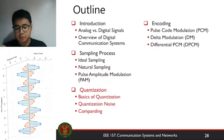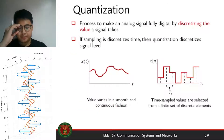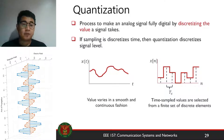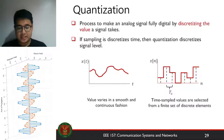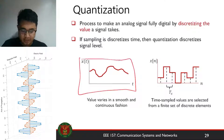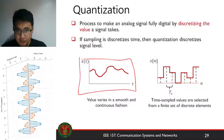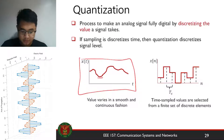Quantization is the process of how we discretize signal levels for our analog signals. The quantization process makes an analog signal fully digital by discretizing the value of the signal. If sampling discretizes time, quantization discretizes signal level. To visualize that, we have an analog signal here which varies in a smooth and continuous fashion. It takes the minimum and maximum level of the signal and converts them into discrete values.